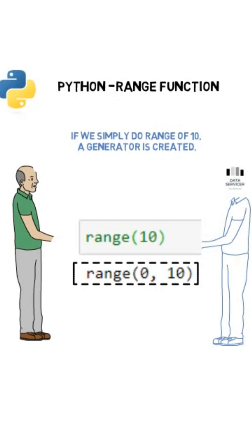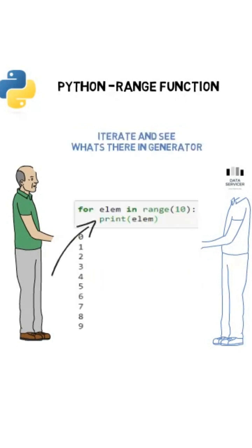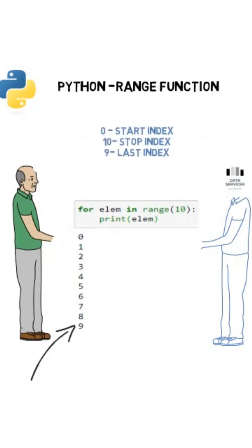But if we want to know what it has generated, we have to iterate and see. So 10 numbers are displayed by taking 0 as the index. It ignores the number that we input.